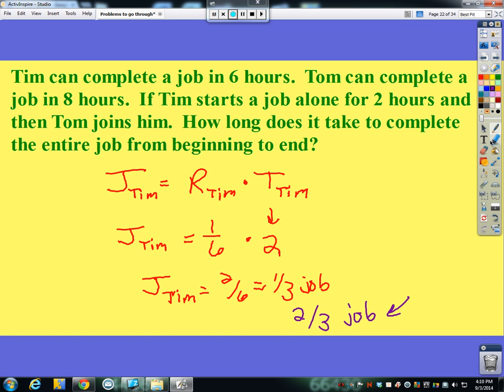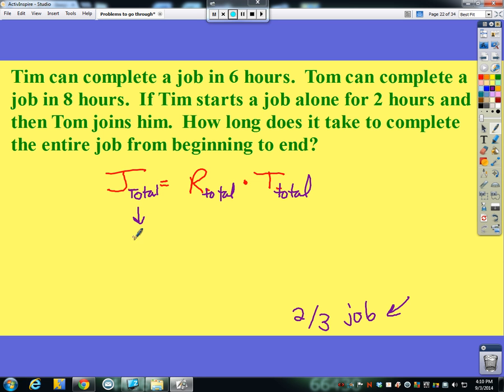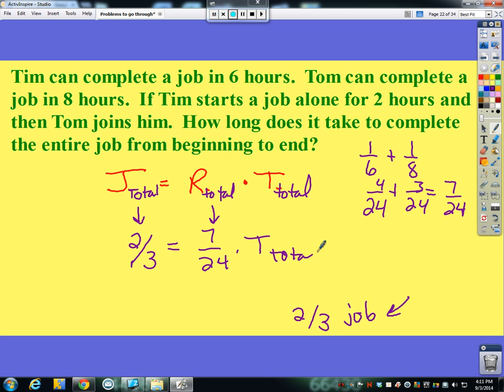Now let's talk about total. Together, Tim and Tom only have to complete two-thirds of a job, because Tim has already started ahead. So now their combined rate: Tim's rate was a sixth and Tom's rate was an eighth. A common denominator of 24. So three-twenty-fourths and four-twenty-fourths make seven-twenty-fourths, their combined rate. Now I want to solve for total time. If I multiply both sides by the reciprocal, twenty-four and three knock out with eight left over, so eight times two is sixteen-sevenths.